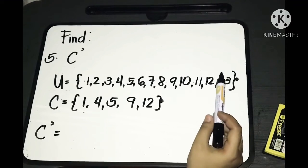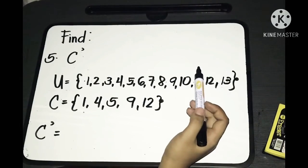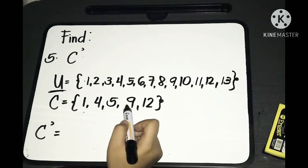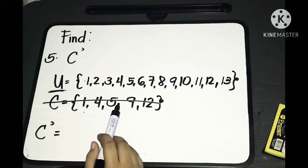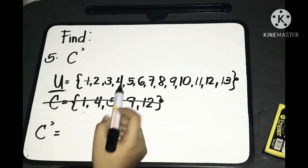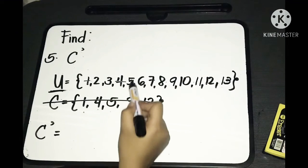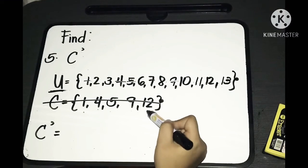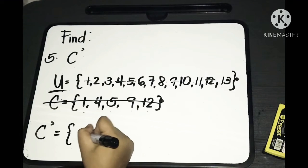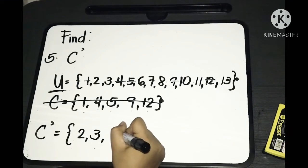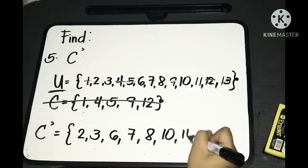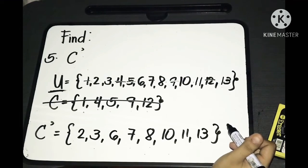For the fifth example, we have C complement. Again, complement of sets — we depend on the universal set. Let's cancel out the elements we have in set C, which are 1, 4, 5, 9, and 12, as well as their common elements with the universal set. The remaining elements are 2, 3, 6, 7, 8, 10, 11, and 13. That is the answer for C complement.